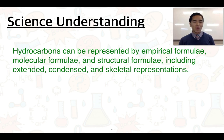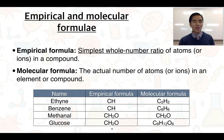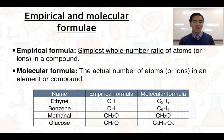We'll also see how we can determine what these formulae are. Firstly, with what empirical and molecular formulae are — we've provided a definition here. An empirical formula, which we've come across before with ionic compounds, represents the simplest whole number ratio of atoms or ions found in a compound. The molecular formula represents the actual number of atoms or ions found within that compound itself.